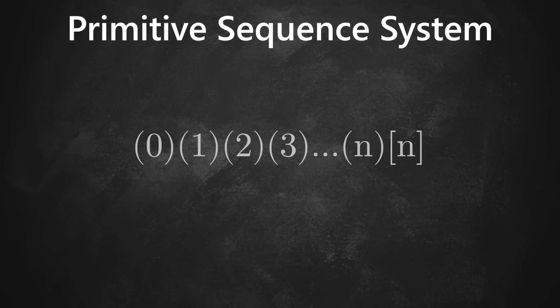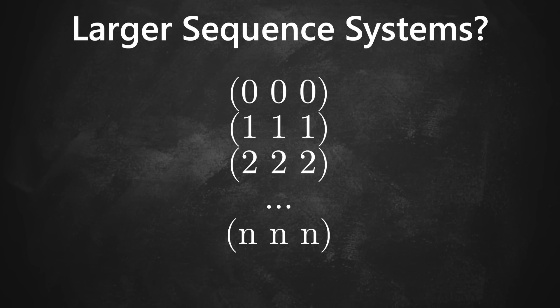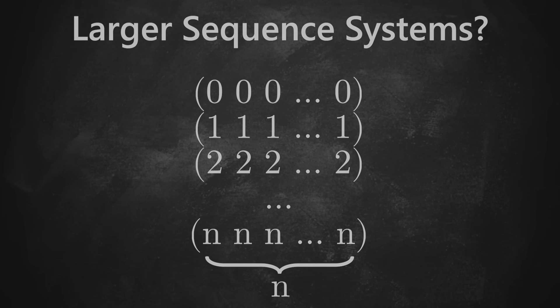So how fast does BMS grow? Well, with a single row called a Primitive Sequence System, the function has a growth rate of epsilon naught. BMS with two rows is called a pair sequence system, and the growth rate ordinal is equivalent to the Buchholz ordinal where we left off last time. What about three rows, or four, or n rows?